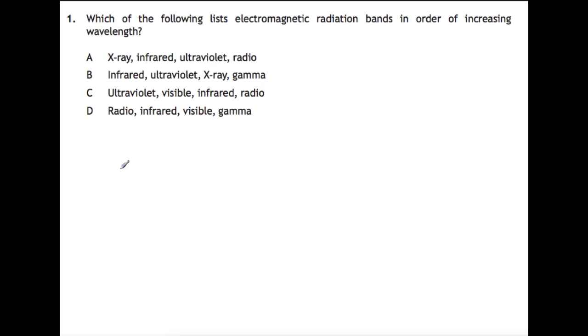This question is asking you to work out which of the four shows the radiation bands in order of increasing wavelength. By increasing wavelength you're reducing frequency and reducing energy. I would start by writing out the seven electromagnetic spectrum parts from most energetic to least energetic: gamma, then X-ray, UV, visible, IR,